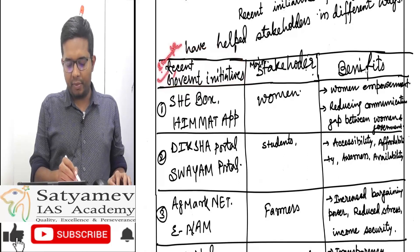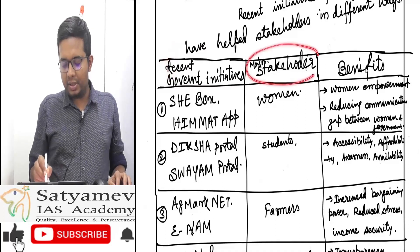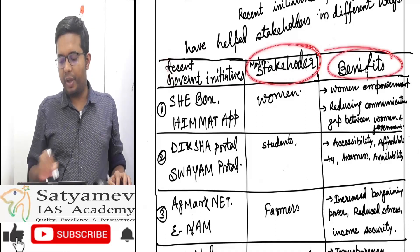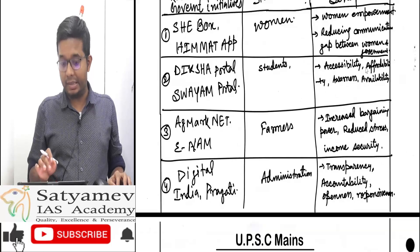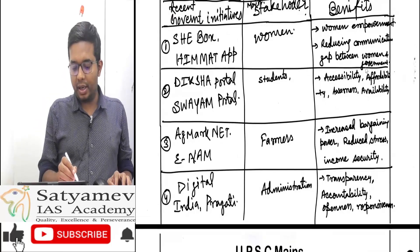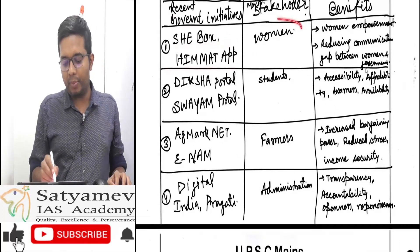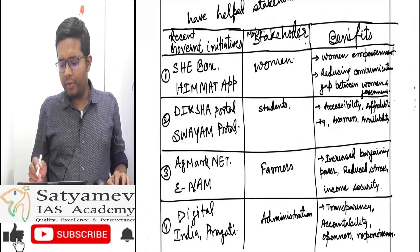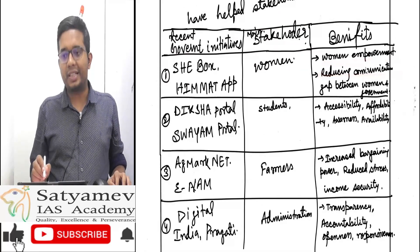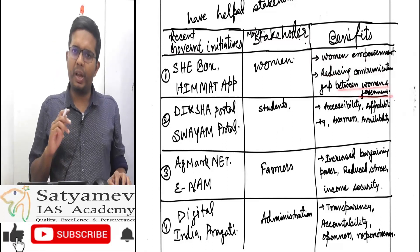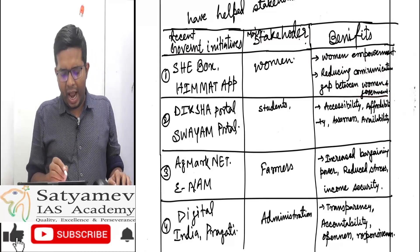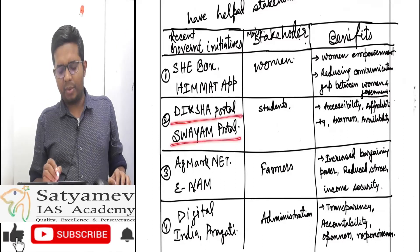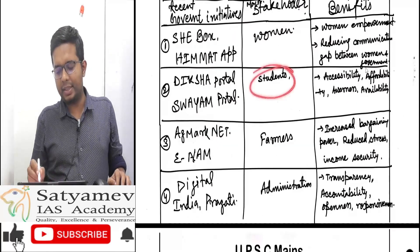We are going to write the positive points in these three paragraphs. For women, the C-Box Himmat app will provide benefits such as women empowerment and reducing the communication gap between women and government. For education, the Diksha Portal and Swayam Portal for students are increasing accessibility, affordability, awareness, and availability of knowledge.